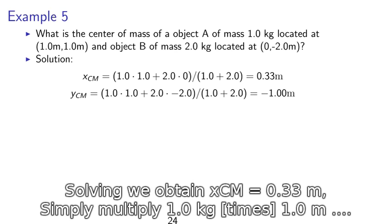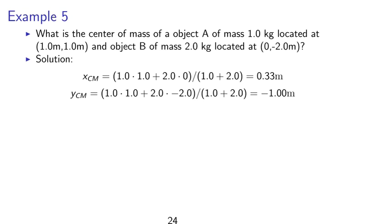Solving we obtain xcm equals 0.33 m and ycm equals negative 1 m. We simply multiply 1 kg times 1 m for xcm plus 2.0 kg times 0 divided by the sum of the masses which is 3 gives us 0.33. Similarly for ycm.